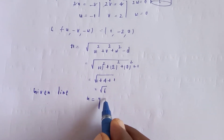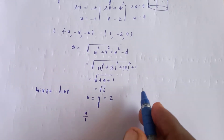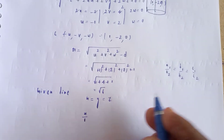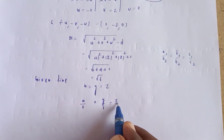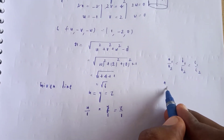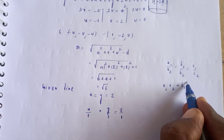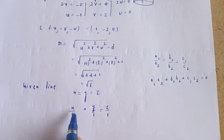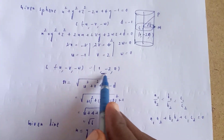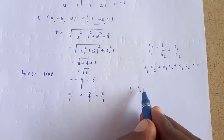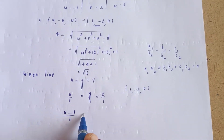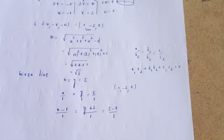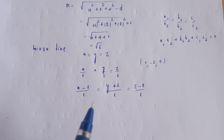The generator is parallel to the line x equals y equals z. The direction ratios are a1 by a2 equal to b1 by b2 equal to c1 by c2. From x equals y equals z, the direction ratios are 1 comma 1 comma 1. The center is 1 comma minus 2 comma 0.